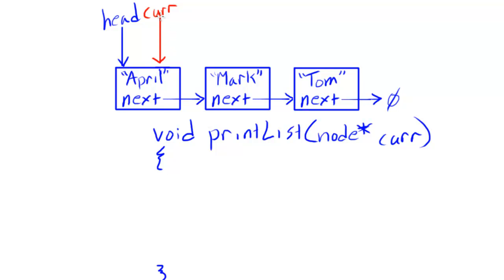The base case would be whenever this current pointer is pointing to null — at that point we don't have anything left to process, no other nodes in our linked list. In the base case we just want to return from our print list function, so there's actually nothing to do. It turns out we don't even have to explicitly test for the base case because we'd return automatically if we're not in our recursive case.